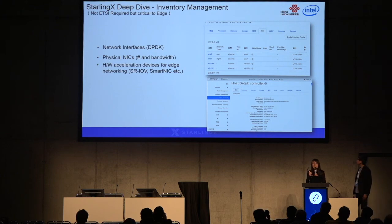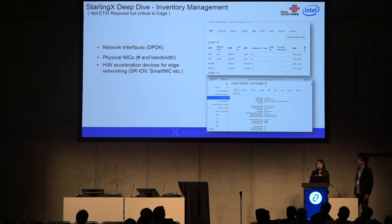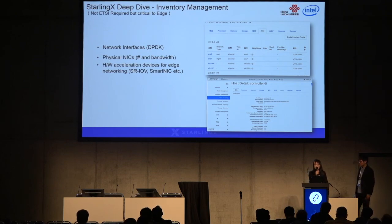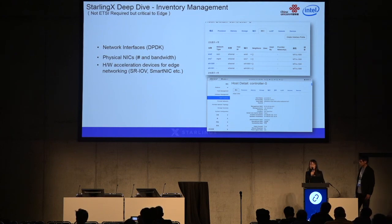The inventory management is also not part of the ETSI MEC document but is very important for edge computing cloud. This type of detailed information can be collected by StarlingX for higher-layer software. The first category is DPDK-enabled network interface parameters. The second is the physical NICs baggage. The third is hardware acceleration devices such as SR-IOV, SmartNIC, and so on.